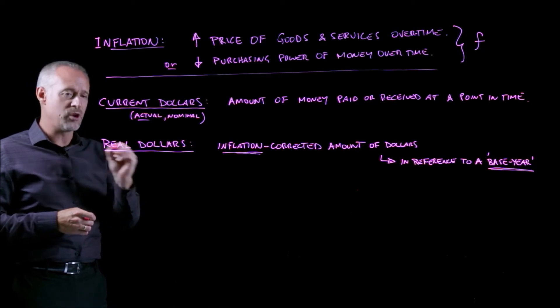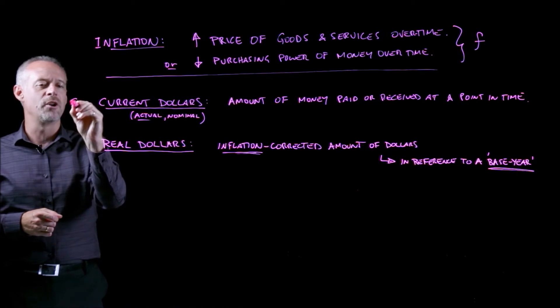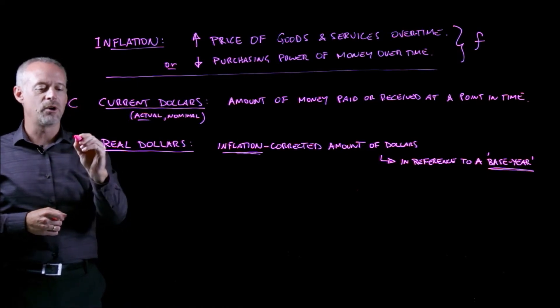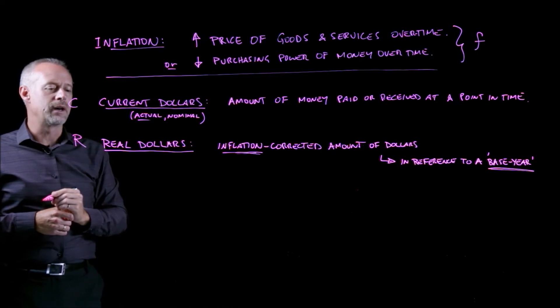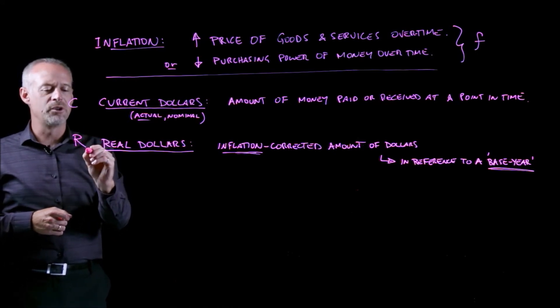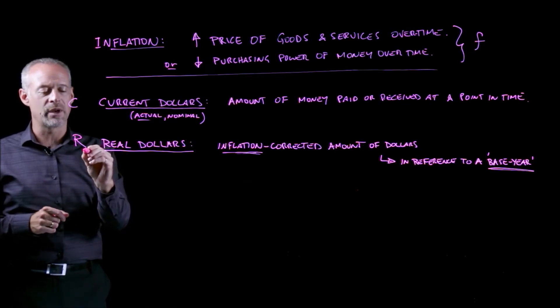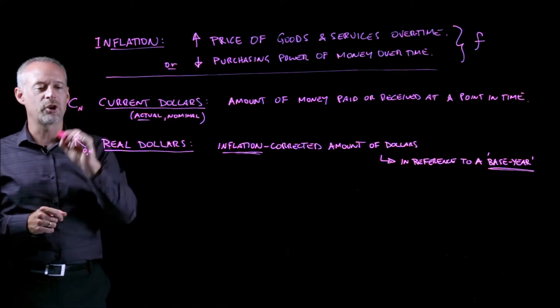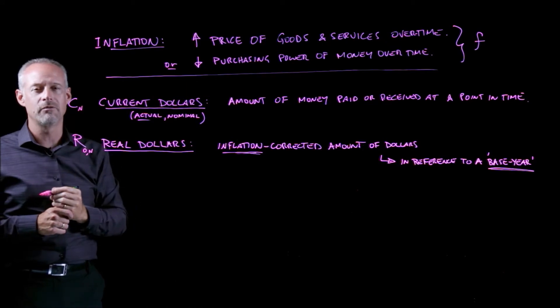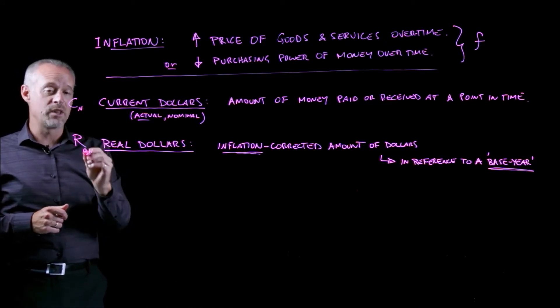So we'll also introduce the variables. We call current dollars C and we call real dollars R. And sometimes for real dollars, we'll use, if time t equal to zero is the base year, sometimes you'll see it written like this, where n is the number of years away that the current dollars are being spent.